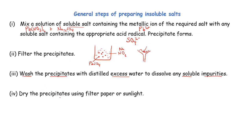Lastly, dry the residue using filter paper or a little sunlight. Place the white solid particles or crystals onto filter paper; over time the filter paper will absorb the remaining liquid and we will be left with our dry precipitate. That is how we can prepare any insoluble salt, as long as we can identify two soluble salts — one containing the metallic radical and the other containing the acid radical.